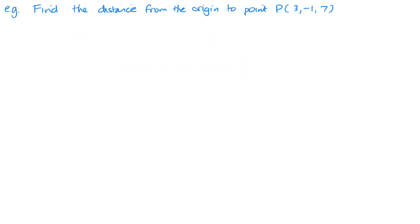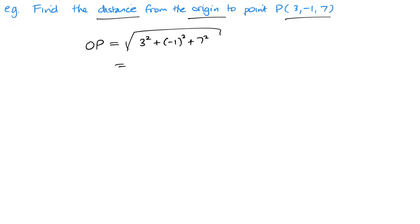Very straightforward example: find the distance from the origin to point P. The point is P(3, −1, 7), so OP equals the square root of 3 squared plus (−1) squared plus 7 squared. I always put the negative number in brackets as a reminder in the calculator to avoid mistakes. This gives the square root of 59, or 7.7 to one decimal place, depending on what the question asks.